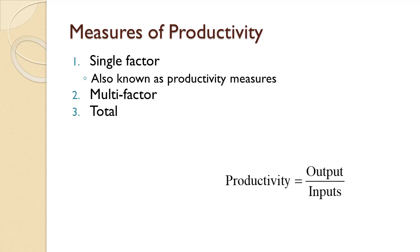With multi-factor productivity, more than one input is used. For example, labor and machine utilization might be combined. When more than one input is used, the inputs are always measured in dollars. Otherwise, adding them together does not make sense. After all, what does it mean to add labor hours and machine hours?